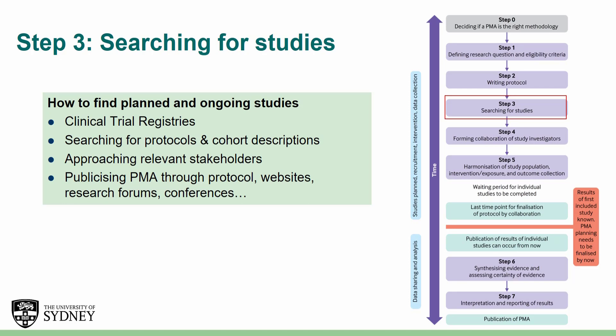Similar to a traditional meta-analysis, a good PMA should be preceded by a search. However, since studies are planned or ongoing, this search can be a little more difficult. Studies for inclusion in a PMA can be identified by searching for trial registration records, protocols and cohort descriptions, and by actively approaching relevant stakeholders in a field. A PMA can also motivate other researchers in the field to conduct a similar study, so the search can be more active.